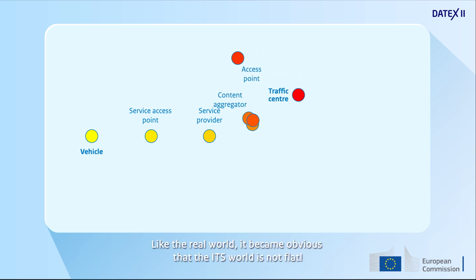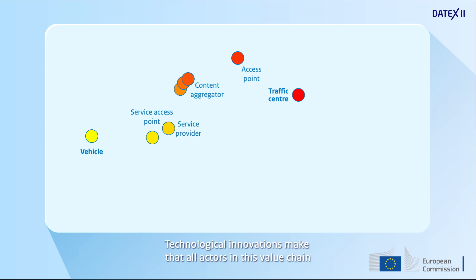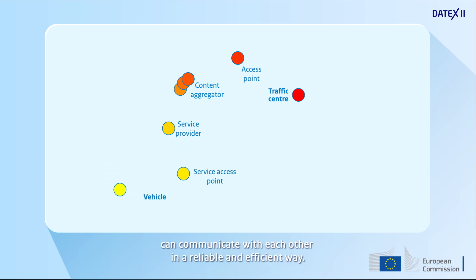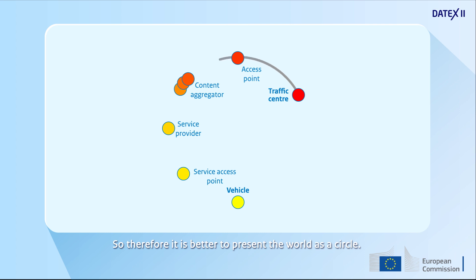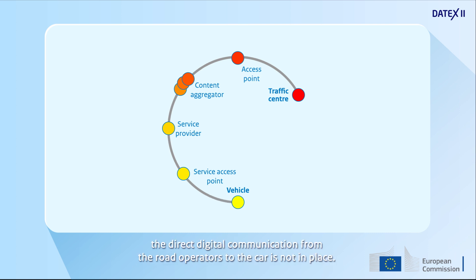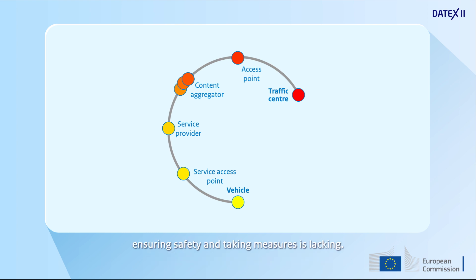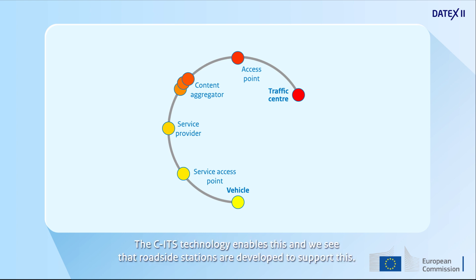Like the real world, it became obvious that the ITS world is not flat. Technological innovations mean that all actors in this value chain can communicate with each other in a reliable and efficient way, so it is better to present the world as a circle. A gap becomes obvious: the direct digital communication from the road operators to the car is not in place. The digital exchange of information for which they are primarily responsible – ensuring safety and taking measures – is lacking. The CITS technology enables this, and we see that roadside stations are developed to support it.